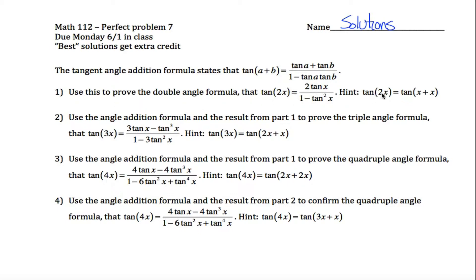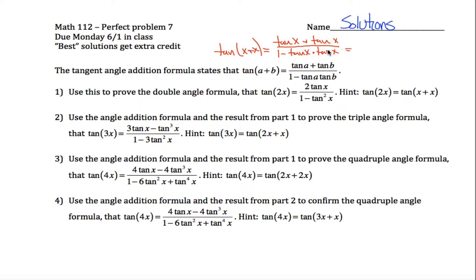Essentially, all you have to do is say the tangent of 2x is the tangent of x plus x. So the tangent of x plus x, using this formula, would be the tangent of x — because playing the role of a is x — plus the tangent of x — because playing the role of b is also x — divided by 1 minus tangent of x times tangent of x. In other words, tangent of x plus another tangent of x is just 2 tangent of x. And the denominator, 1 minus tangent of x times tangent of x, is just 1 minus tangent squared of x. The double angle formula looks exactly like that.